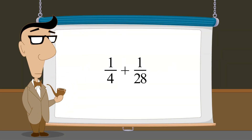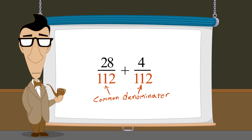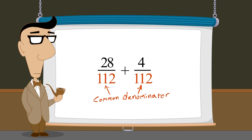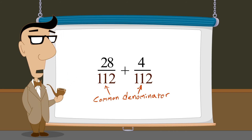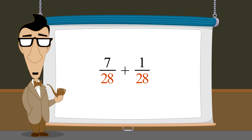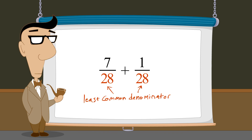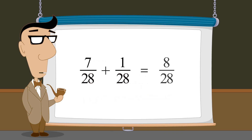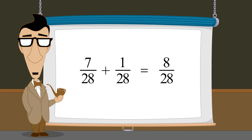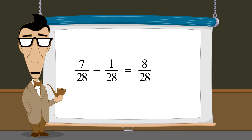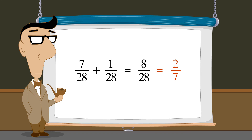We can see that in order to add or subtract fractions with different denominators, we need to create a common denominator. We have also seen that these calculations can sometimes be greatly simplified if we use the least common denominator. However, even when we use the least common denominator, the result of our addition or subtraction may be a fraction that can still be written in a simpler form. In the next lecture, we will see how to convert any fraction to its simplest form.